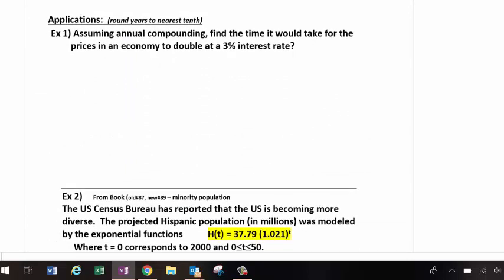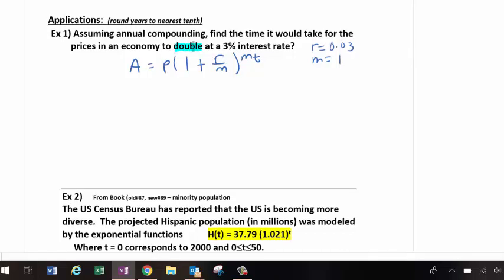So we're now going to go to the word problems. We are going to start with dealing with this problem which is going back to using our compound interest. So since we're compounding interest my formula is a equals p times 1 plus r over m to the mt. What we know in this problem is r equals 0.03, m is 1 since it's annual, and I want it to double for this problem. So I don't actually know a and p but I want it to double.